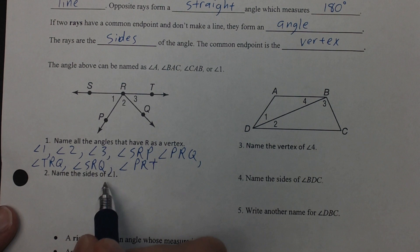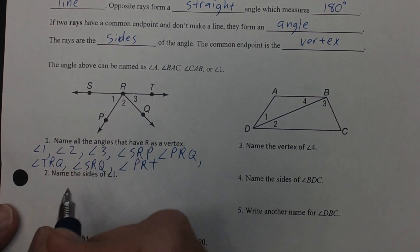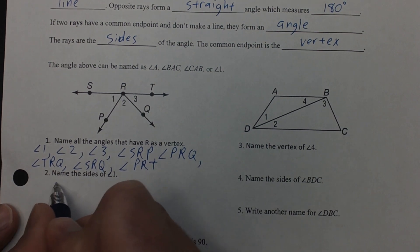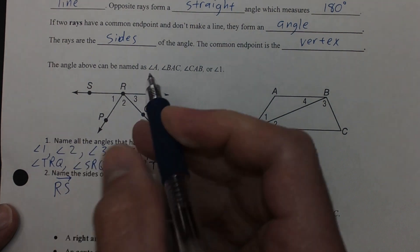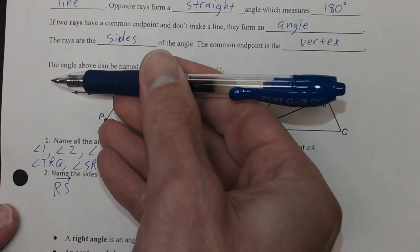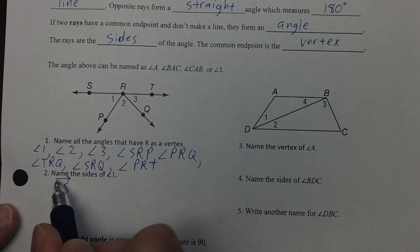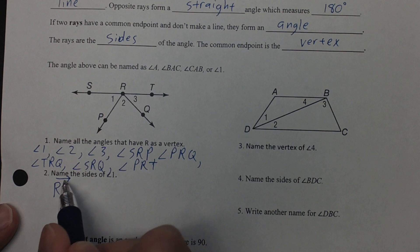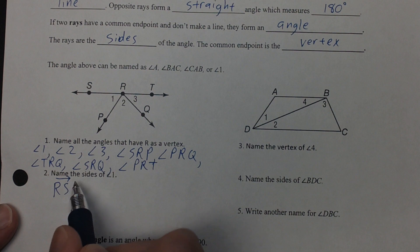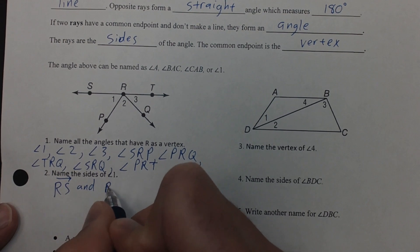Going down to number 2: name the sides of angle 1. The sides are formed by different rays. One of the rays is going to be ray RS. Notice, even though S is on the left side, S is the side that continues indefinitely, so we always draw the ray symbol going left to right. R is the endpoint and S is the side that extends — so ray RS. And the other side of angle 1 was ray RP.